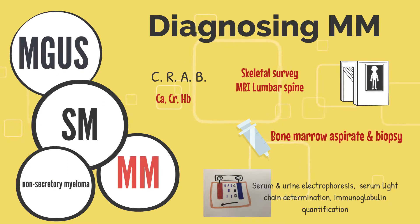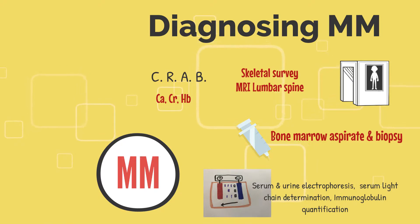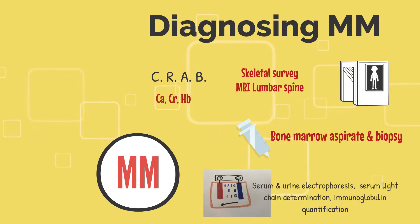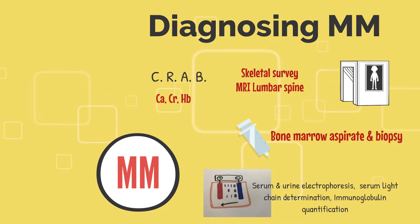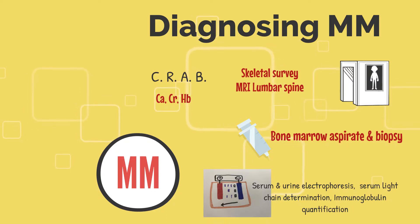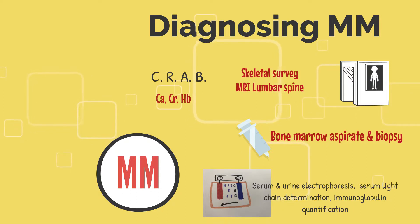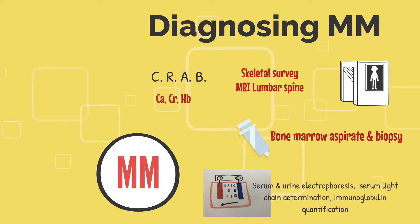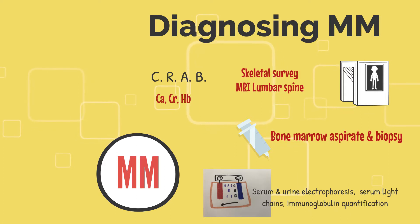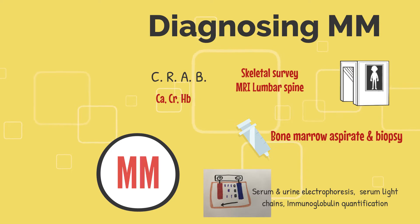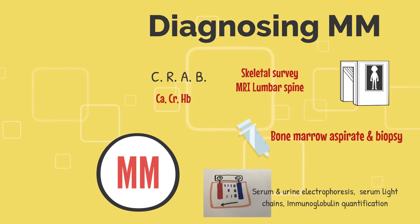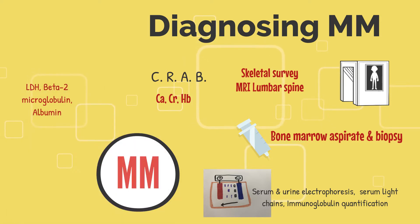In order to make the diagnosis of multiple myeloma, bloods are sent paying special attention to calcium levels, creatinine levels, and hemoglobin levels to look for evidence of end-organ damage. Serum and urine electrophoresis, serum light chain determination, and immunoglobulin quantification are sent to characterize the type and amount of M-proteins. Skeletal survey and MRI of the lumbar spine may be done to look for the presence and extent of bony lesions. A bone marrow aspirate may be done to quantify plasma cell infiltration. For prognostication, the LDH level, beta-2-microglobulin level, and albumin level may be sent as well.